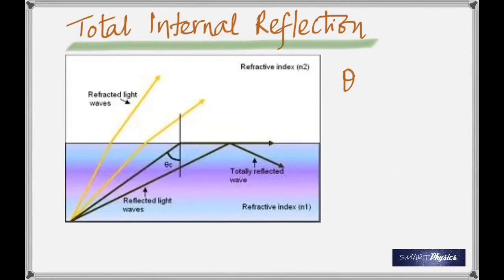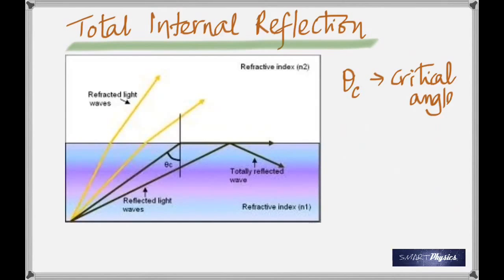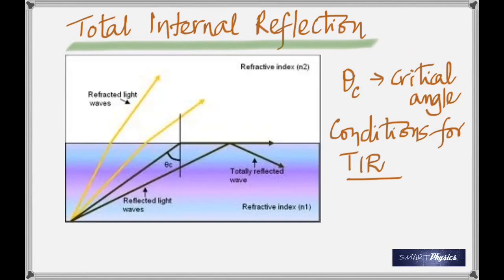There are two conditions for total internal reflection. Number one: the ray must be passing from a more optically dense to a less dense medium. Number two: the angle of incidence must be greater than the critical angle. This is what makes diamonds so precious — because of total internal reflection.